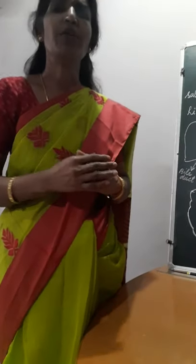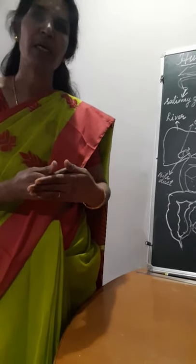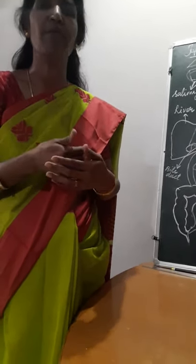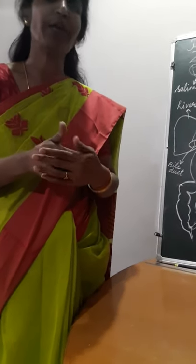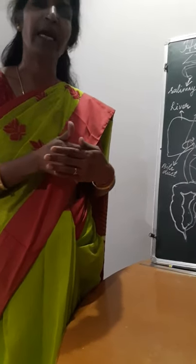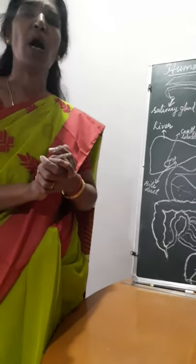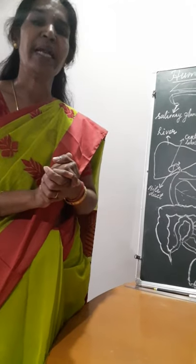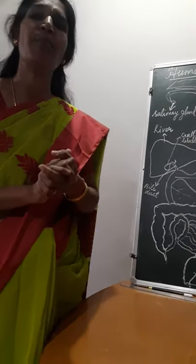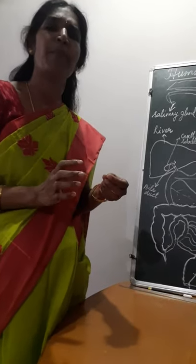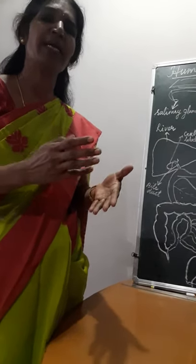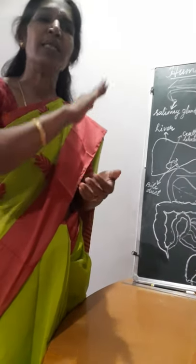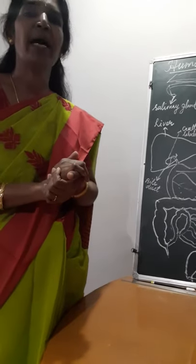How do humans take nutrition? Nutrition means taking essential nutrients. Humans take essential nutrients through food. Human beings also follow holozoic nutrition — the complex food is broken down into smaller pieces through the process known as digestion. The complex food is broken down into simpler parts, then it is absorbed, assimilated, and used for various functions.